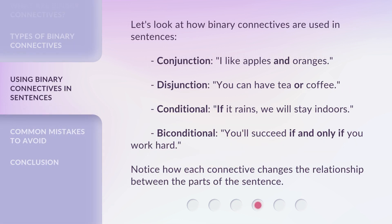Let's look at how binary connectives are used in sentences. Conjunction: 'I like apples and oranges.' Disjunction: 'You can have tea or coffee.' Conditional: 'If it rains, we will stay indoors.' Biconditional: 'You'll succeed if and only if you work hard.' Notice how each connective changes the relationship between the parts of the sentence.